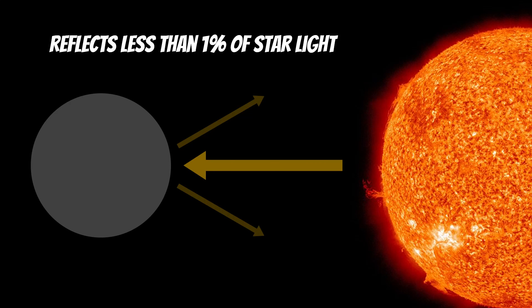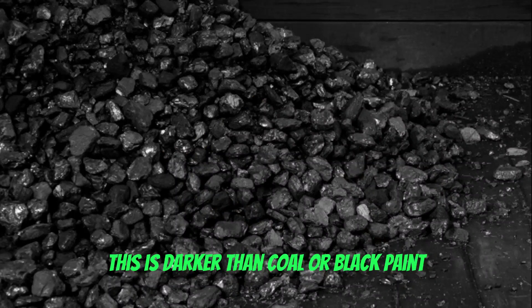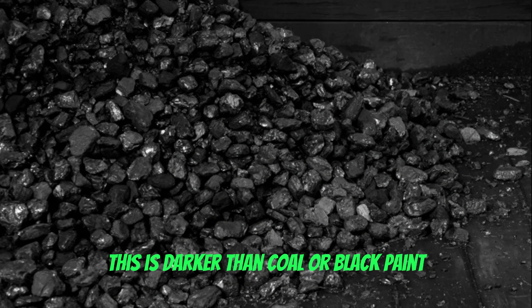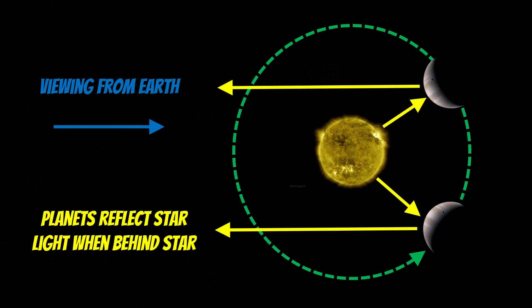How do we know that? And how has that actually been measured? Before we do that, just to put that into context, that is darker than coal or black paint. Coal and black paint absorb a lot of the light that falls on it, and they don't reflect a lot of that. This planet is actually reflecting less light than you'd expect for coal or some black paint.